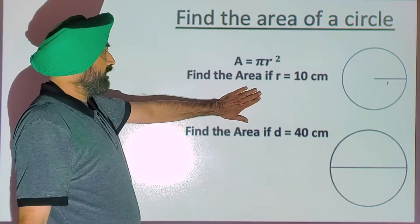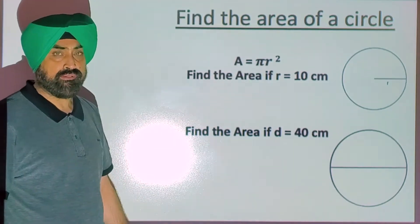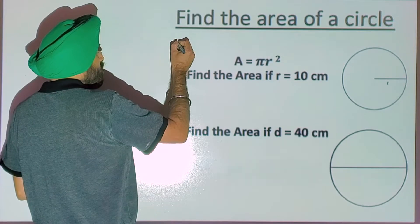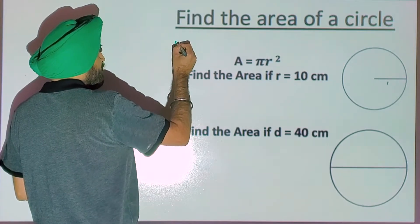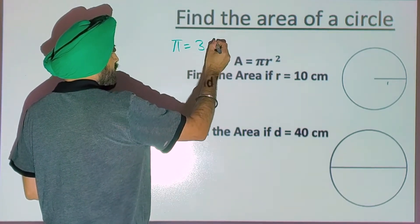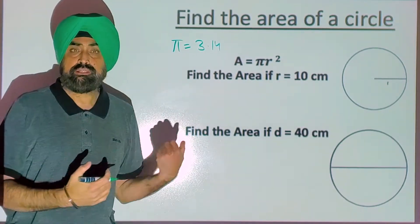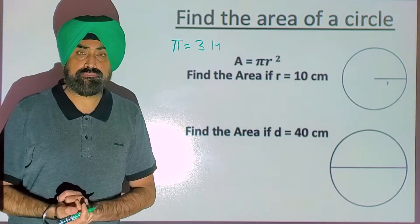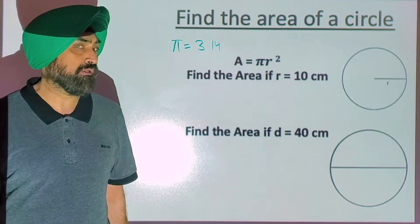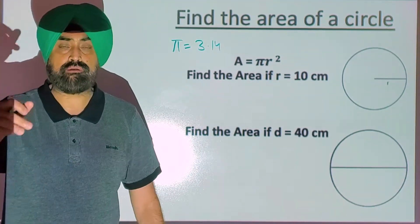Now, how we find the area — the formula is A equals pi r squared, where pi is a constant. The value of pi is 3.14. Either you use 3.14, or if you are in higher classes, you can use the pi button on the calculator.